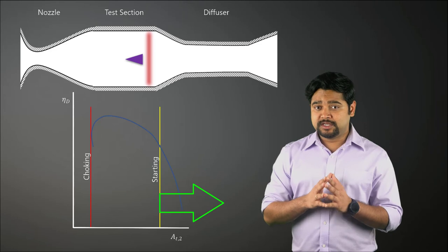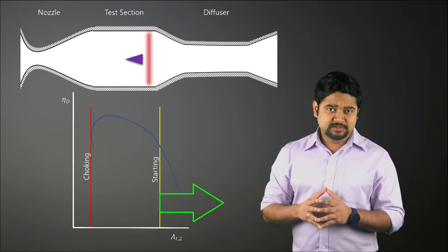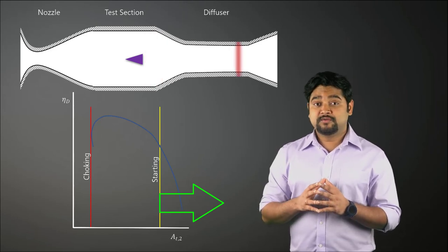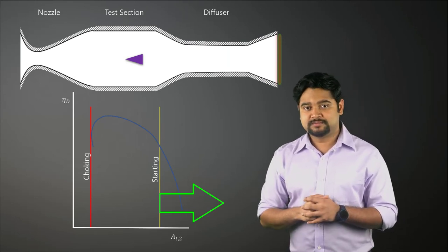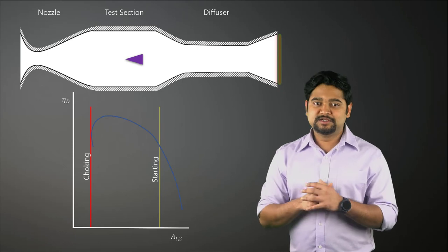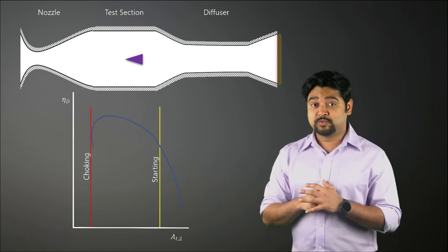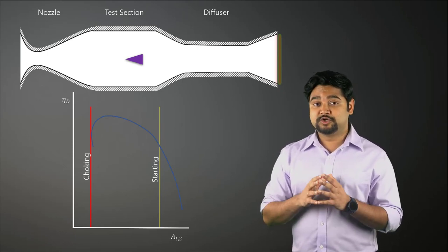If AT2 is equal to or more than this value, then the normal shock will proceed through the diffuser section and the wind tunnel will start properly. This is the reason why many advanced wind tunnels use variable geometry diffusers. With this, we have come to the end of this lesson.